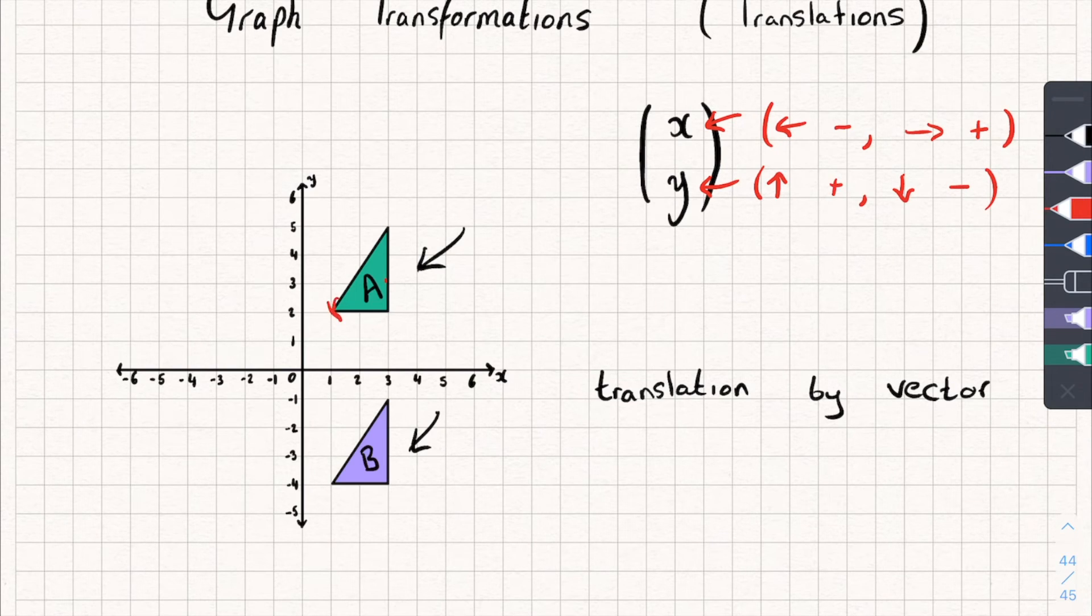So again, I'm going to pick a corner on both. And I'm going to see how to get from corner of A to the corner of B. So how far left or right has it gone? Well, it hasn't. It stayed exactly in the same spot. So that, I just write zero.